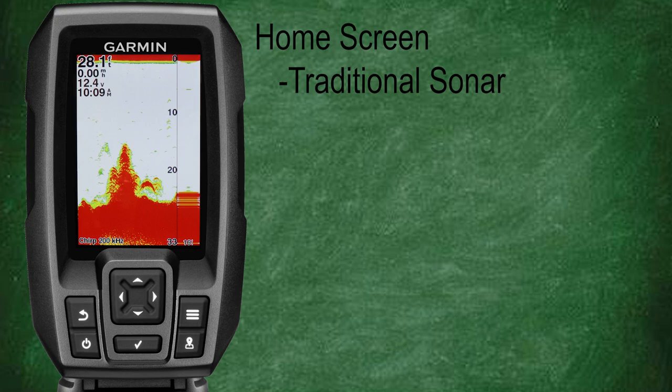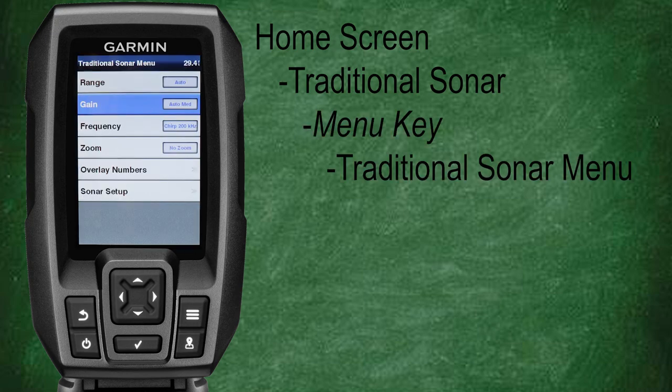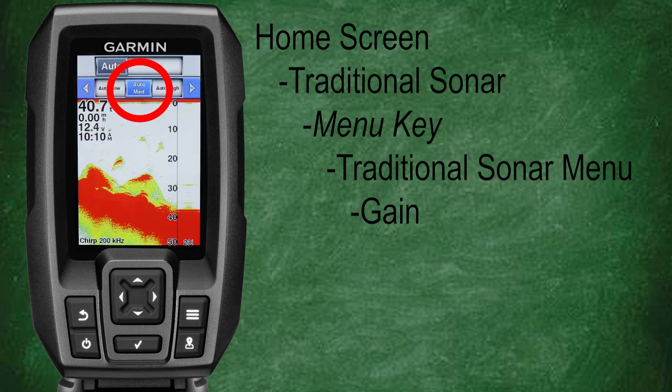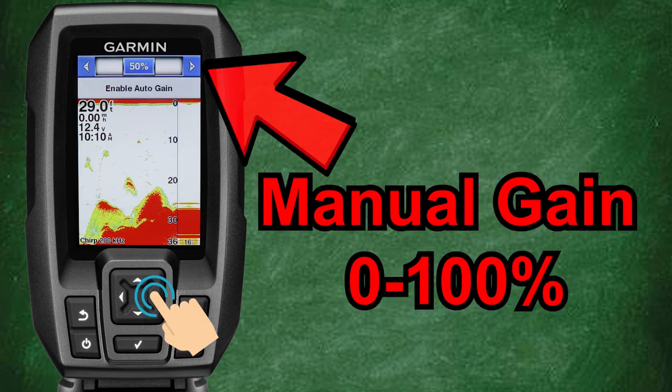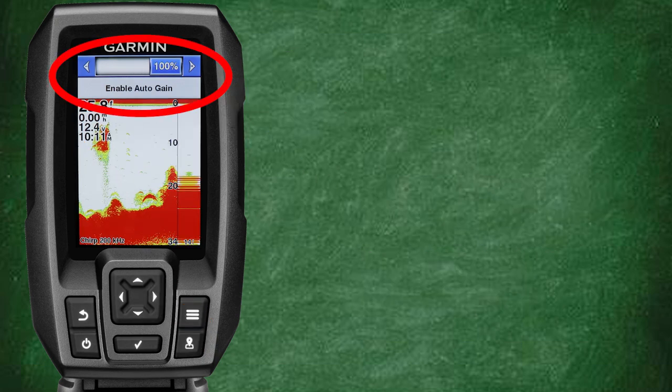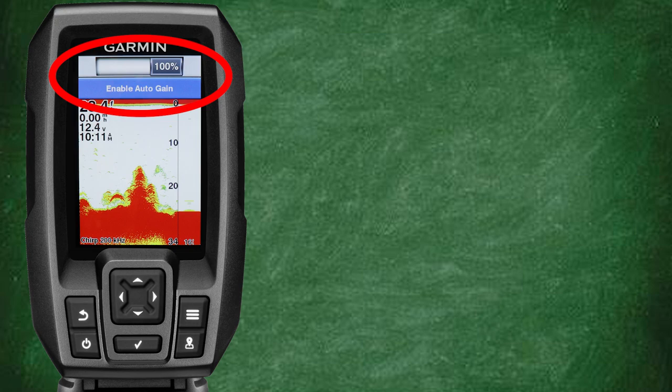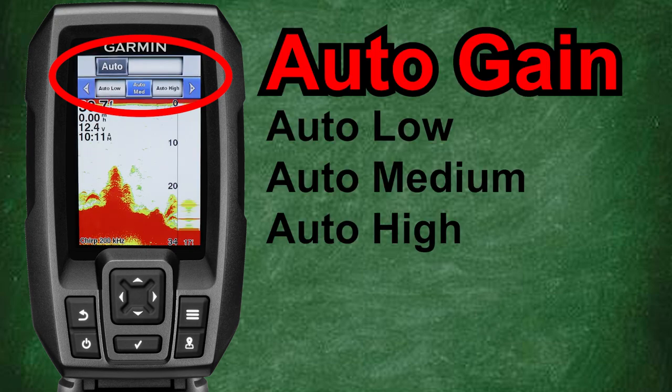The next feature can have a huge impact on what you see or don't see on your sonar screen — and that's the gain adjustment. Having a good understanding of your gain adjustments is very important, because gain adjustment can be a double-edged sword. Too much gain may show more detail but may introduce more clutter and noise. Too low of gain may get rid of noise and clutter but now you may be missing fish. From the traditional sonar screen press the menu key, scroll down and select gain. Here you'll see your current gain setting, which in our case is set to auto medium. You can use the arrow keypad to manually select your desired sonar gain from 0 to 100, or set it back to auto by selecting enable auto gain, which lets you select between auto low, auto medium, and auto high gain.